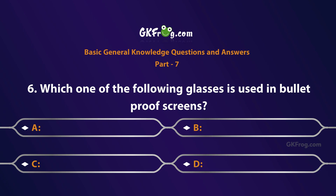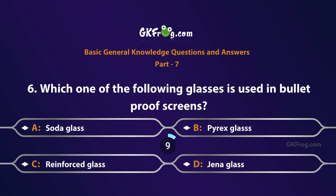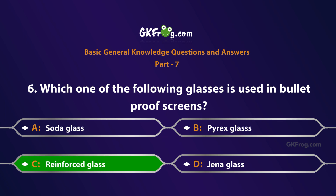Which one of the following glasses is used in bulletproof screens? A. Soda glass, B. Pyrex glass, C. Reinforced glass, D. Jena glass. Correct answer is C. Reinforced glass.